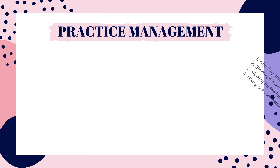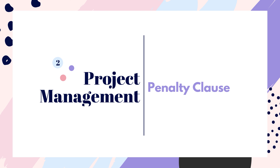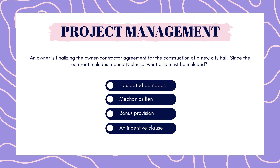Now on to project management. An owner is finalizing the owner-contractor agreement for the construction of a new city hall. Since the contract includes a penalty clause, what else must be included? Liquidated damages, mechanics lien, bonus provision, or incentive clause. Pause here to answer.